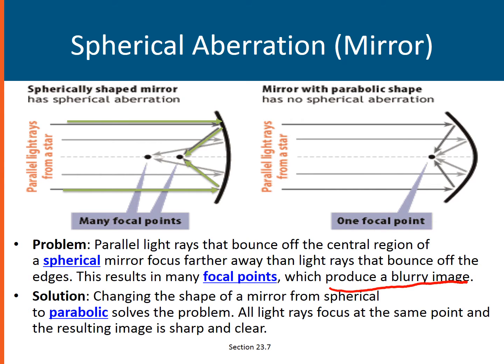To correct this aberration, instead of having a spherically shaped mirror, it is advisable that the mirror would have the shape of a parabola, because it is a characteristic of a parabolic shaped mirror that no matter where the incident rays are — be it far or close to the principal axis — once they hit the mirror, they would all strike at one focal point, resulting in a sharp and clear image.